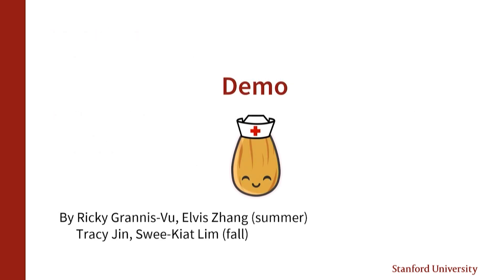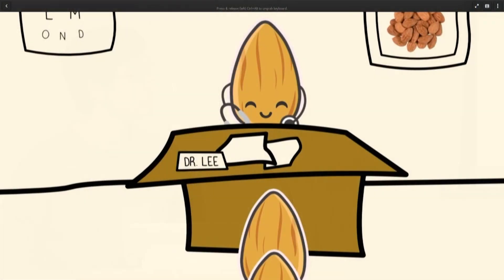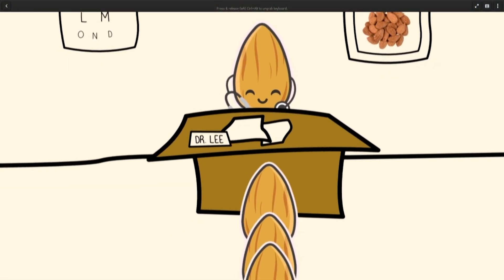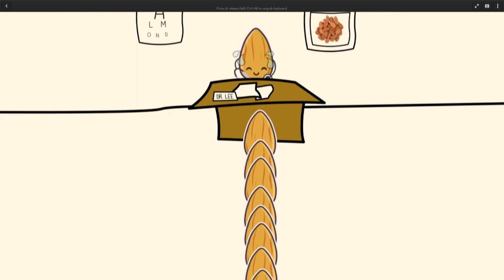We have a short demo — work done by two undergrad students, Rick and Elvis, this summer, and two master's students, Tracy and SK, this fall. The use case we're interested in is helping doctors manage a large number of patients and giving personalized care to each patient. We are dealing with patients who are a little older and need reminders to take their blood pressure. Dr. Lee can only see 5,000 patients a year because he has to schedule regular appointments with every patient periodically.